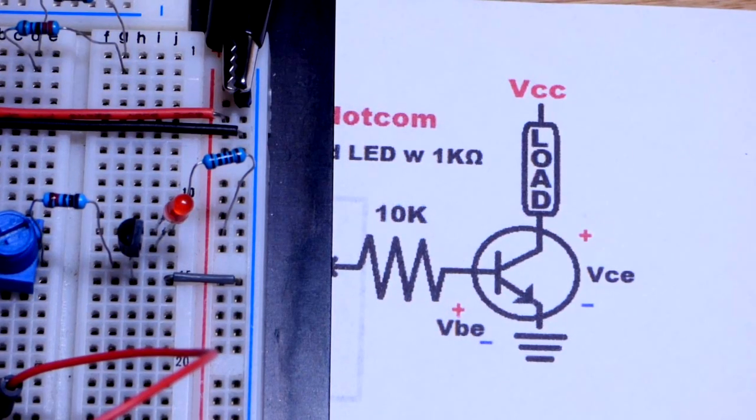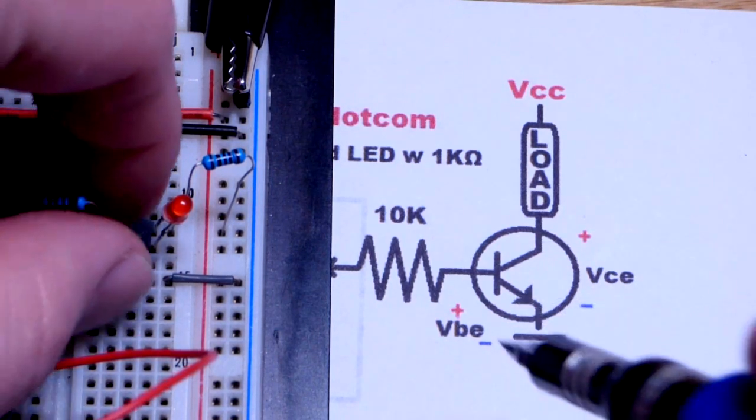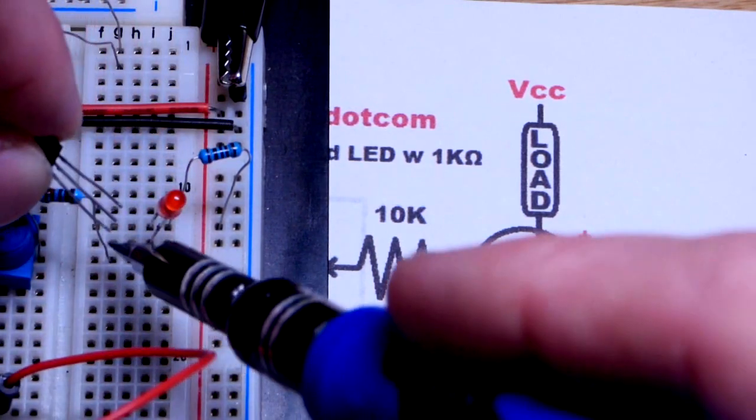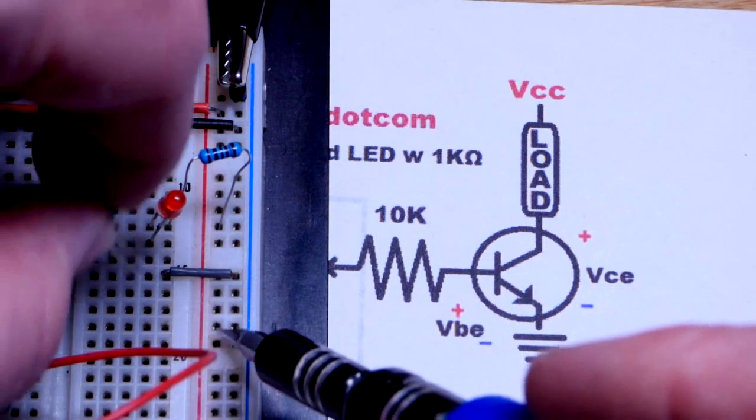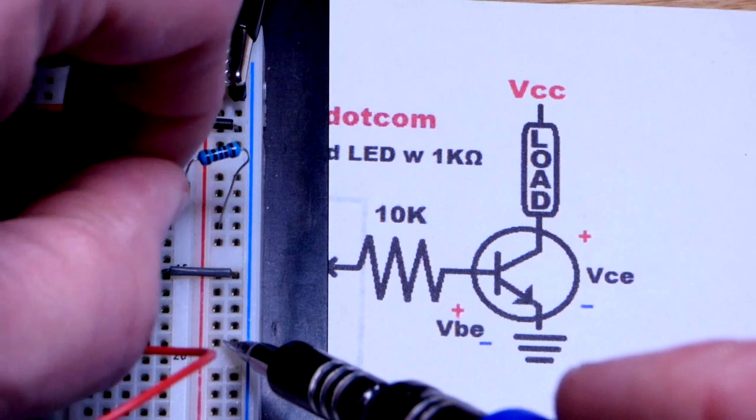So now we zoom in closer to the schematic here. We got the transistor. That is the emitter, which we saw was the left pin. Now it's the bottom pin. Middle pin, the base, goes to that resistor, and then the top pin, the collector, goes up there. And this is just a simple LED circuit.